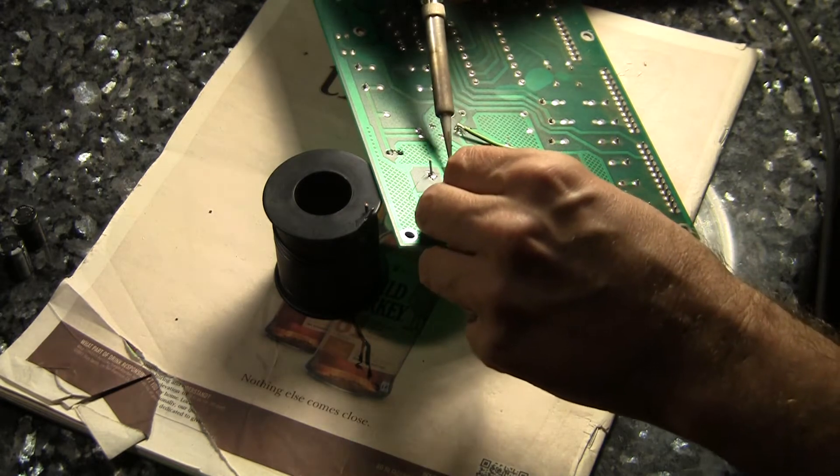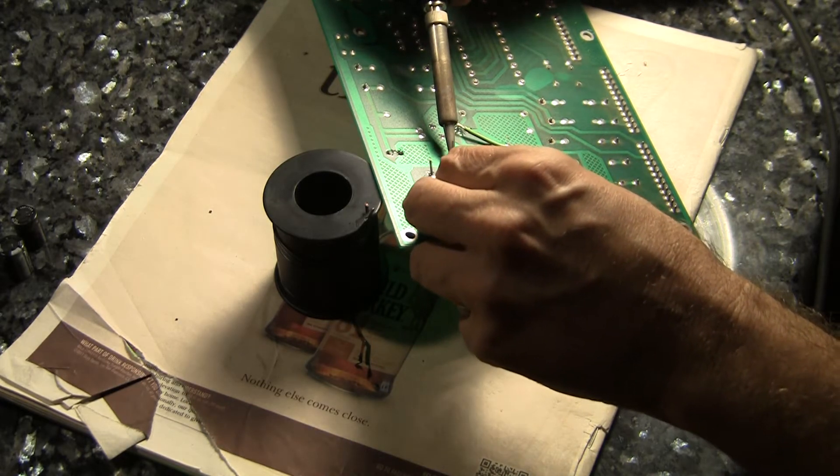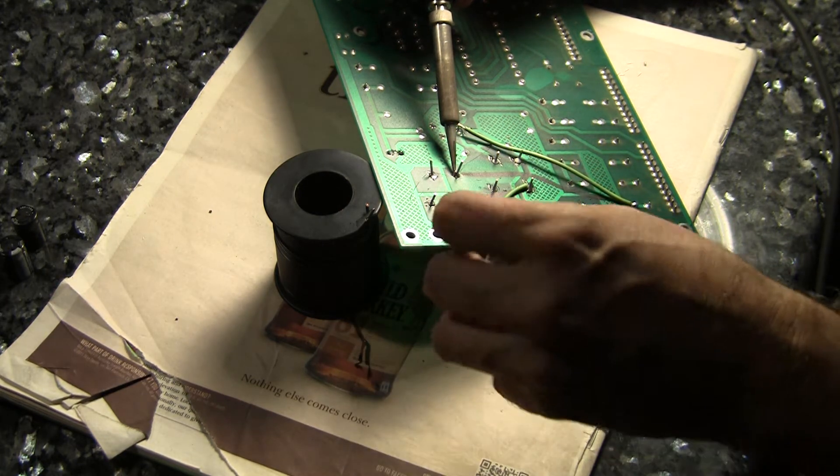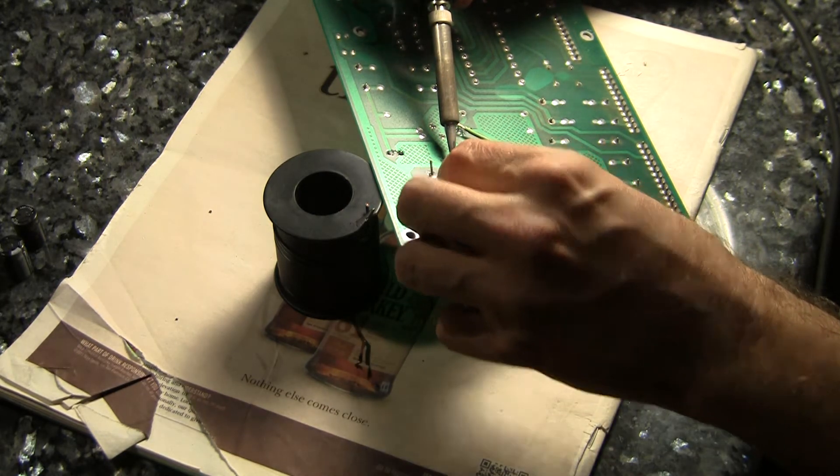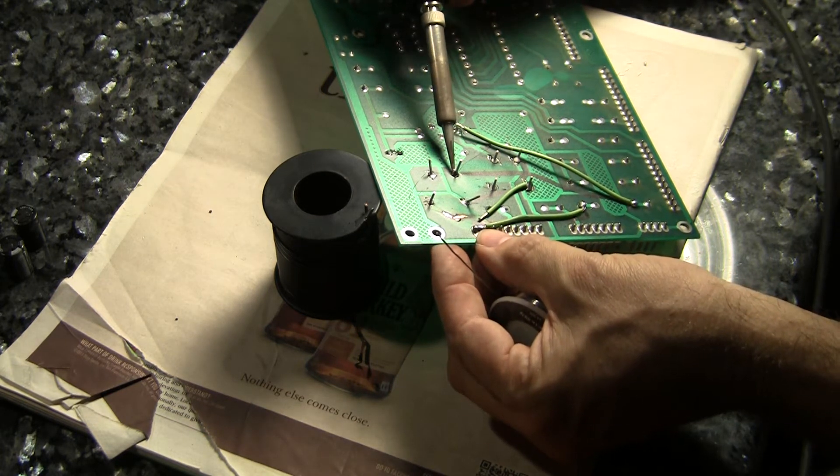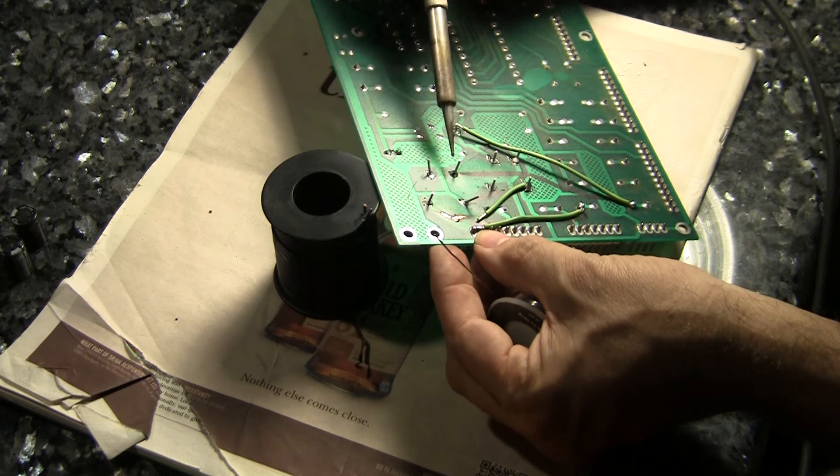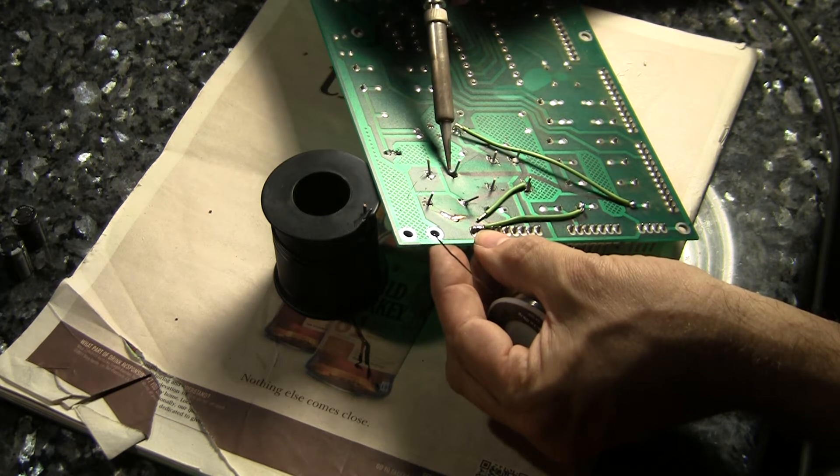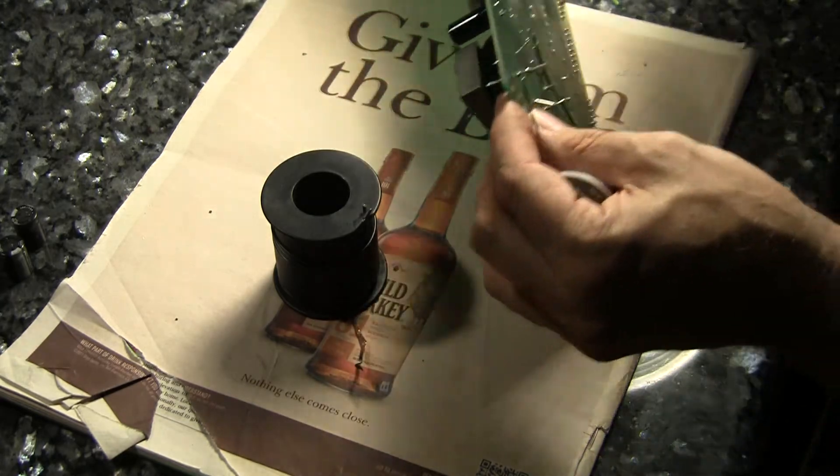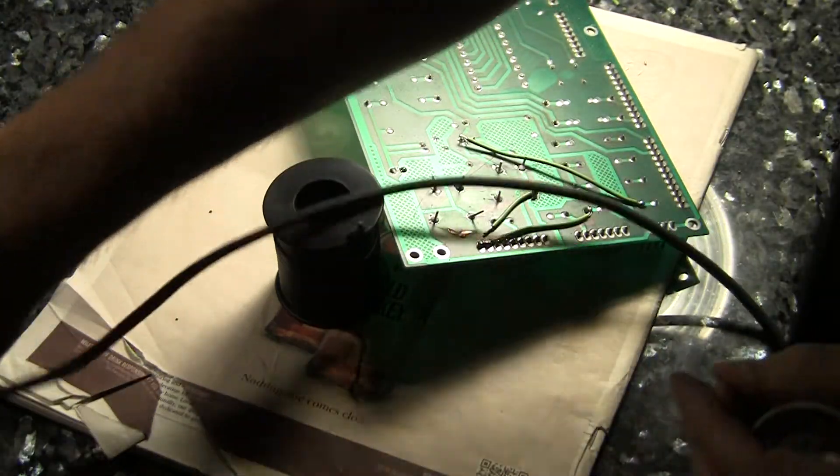Another nice thing about these bridge rectifiers is because of the orientation of the pins, it's hard to put them in wrong. Unlike an electrolytic capacitor where if you desolder it and you weren't paying attention and it's not marked on the board and it's a polarized cap, you might forget which way it went in.